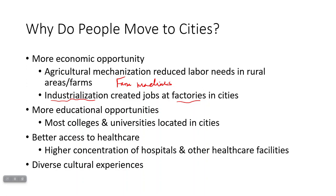Once cities were more established, there were other benefits. For example, educational opportunities — even if a college or university wasn't originally founded in a large city, a city eventually builds up around it. A good example is Texas A&M in College Station — it's very much a college town. Similarly, in Dallas there are multiple universities and colleges. There's also better access to health care; in the countryside you may have one doctor for a large area, but in a city, health care facilities and hospitals are there in higher concentration.